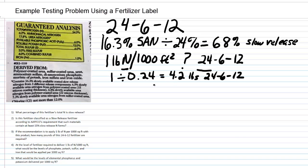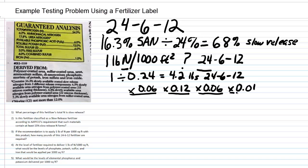We take 4.2 times 0.06 for phosphorus, times 0.12 for potash, times 0.06 for sulfur, and times 0.01 for iron. So: 4.2 times 0.06 equals right at 0.25 pound of P₂O₅. And 4.2 times 0.12 — notice that 12 is twice as large as 6 — turns out to be right at 0.5 pounds of K₂O.